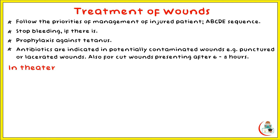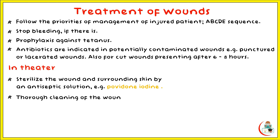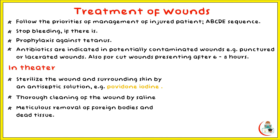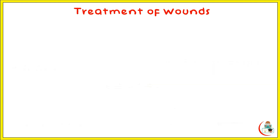In the operating theater, perform the following: sterilize the wound and surrounding skin with an antiseptic solution like povidone iodine. Thorough cleaning of the wound with saline and meticulous removal of foreign bodies and dead tissue are done. Explore the wound to assess the extent of damage; extension of the wound may be needed to allow complete exploration. The definitive treatment depends upon the type of wound, time of presentation, possibility of sepsis, and the presence of associated nerve, vessel, or skeletal injuries.